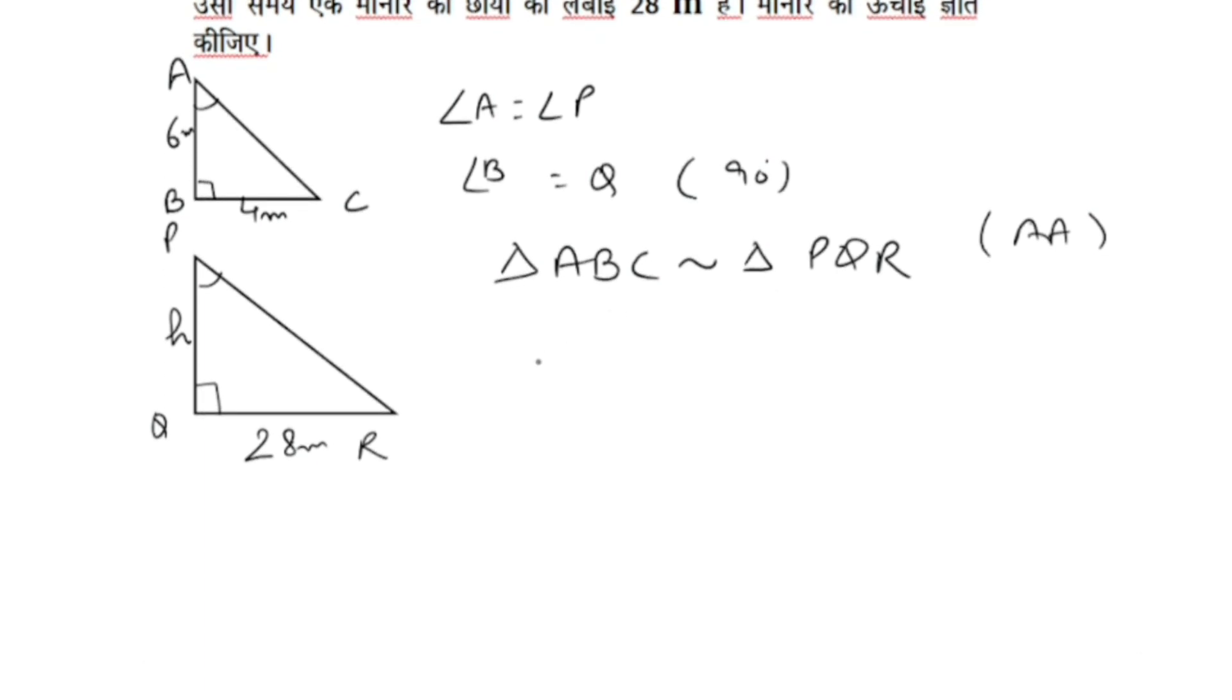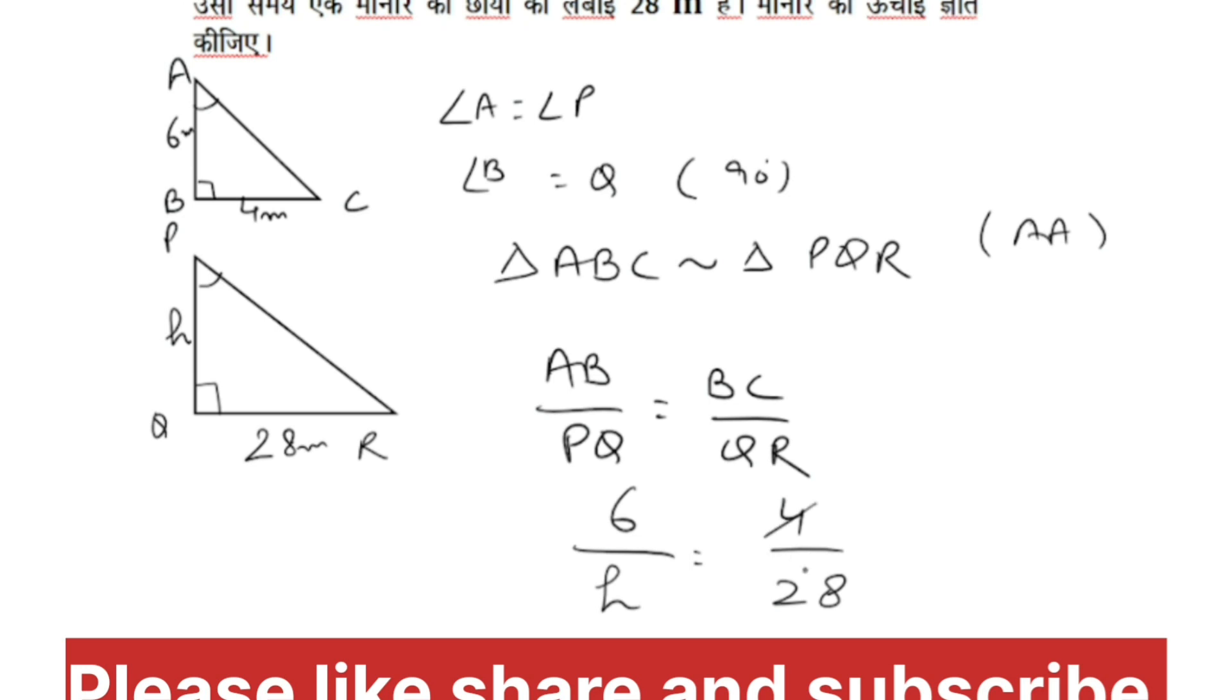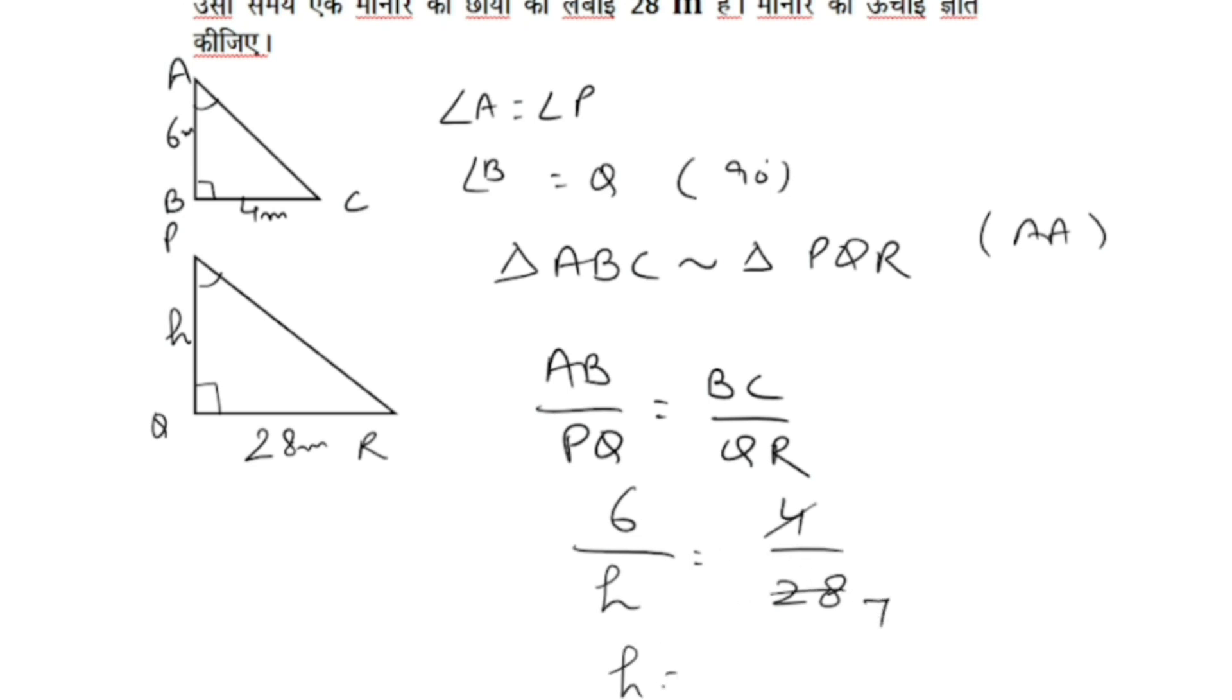If the triangles are similar, then AB upon PQ will be equal to BC upon QR. We have to find PQ. If we cross multiply, 6 upon h equals 4 upon 28. Cross multiplying gives us 42 meters.